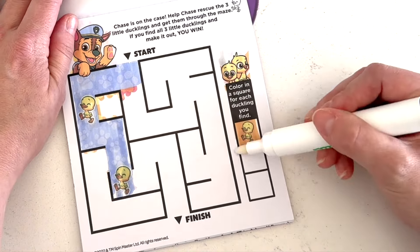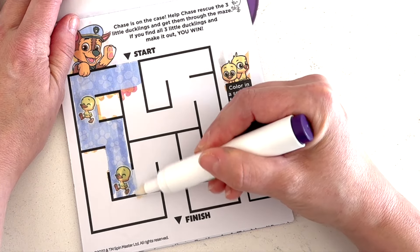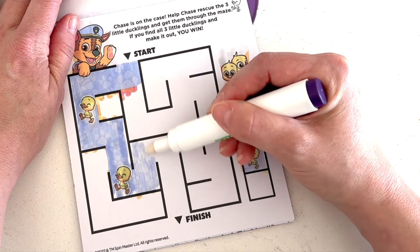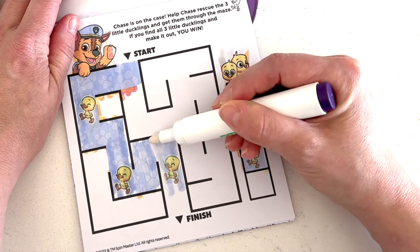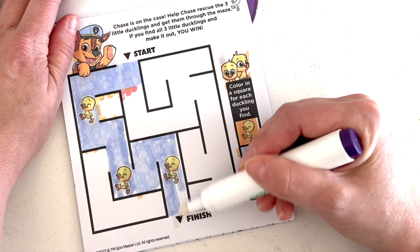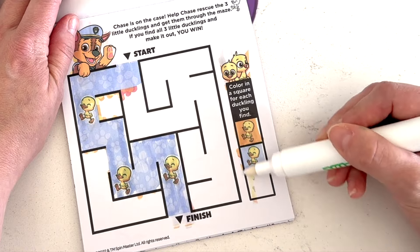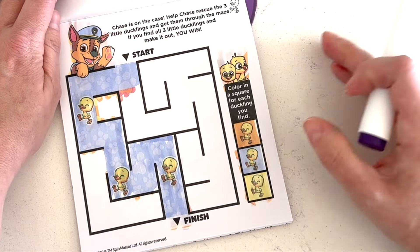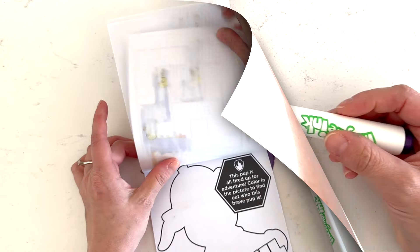There's a ducky. All right, one. That one can't be it. Let's keep going this way. If we go that way, it's going to be a dead end. So we'll go down. There's another ducky. One, two. One more to go. We'll go up and around here. There's the third ducky. We did it.